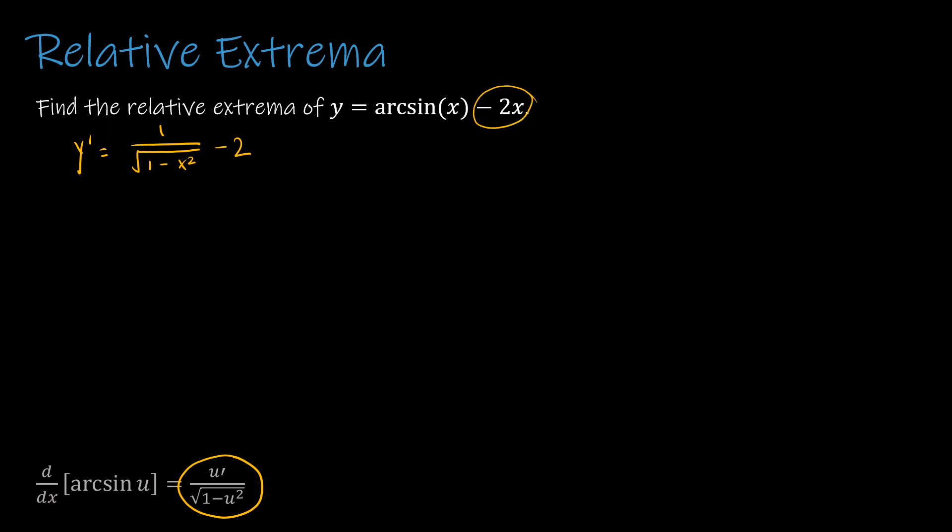I need to know when that equals 0. So 0 is equal to 1 divided by the square root of 1 minus x squared minus 2. Add 2 to each side. I would multiply by 1 minus x squared on each side. Divide by 2. I would square each side. And then I would subtract 1. So negative x squared is negative 3 fourths. I would obviously negate each side. So x squared is positive 3 fourths. And x must be plus or minus the square root of 3 fourths, which is the same as plus or minus radical 3 over 2.